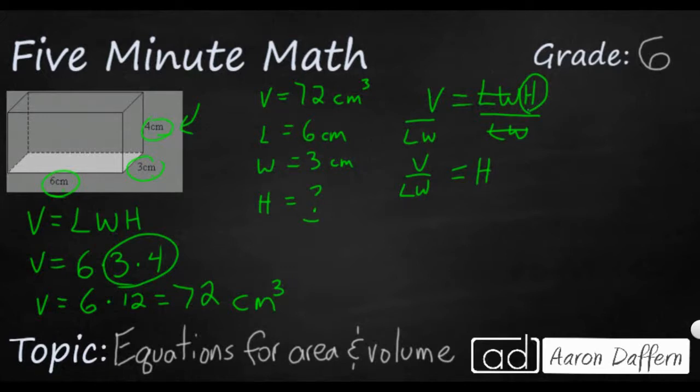Now let's plug the numbers in just to make sure it still works. So we think our height is going to be four centimeters because that's part of the given that the area gave us. The volume is 72 cubic centimeters.